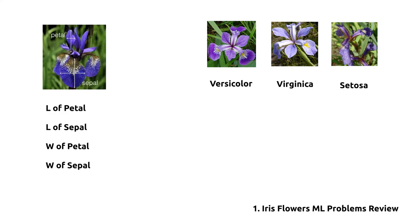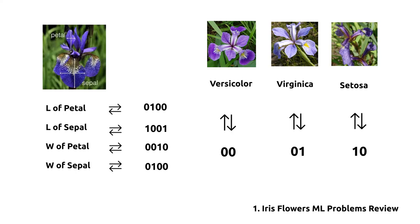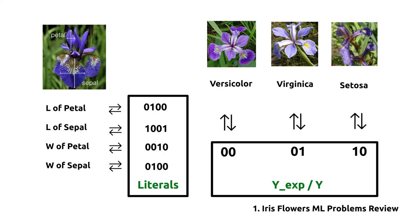Because of the unique features of the Saturn machine, the training data needs to be fed into the system in binary, so we need to binarize the features and classes of the Iris data. The binarized features and classes can be called literals and Y expected in my design.